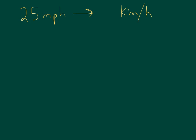So one of the facts we need to know is one mile per hour is equal to 1.61 kilometers per hour. So we're going to use that little bit of information to help us out.